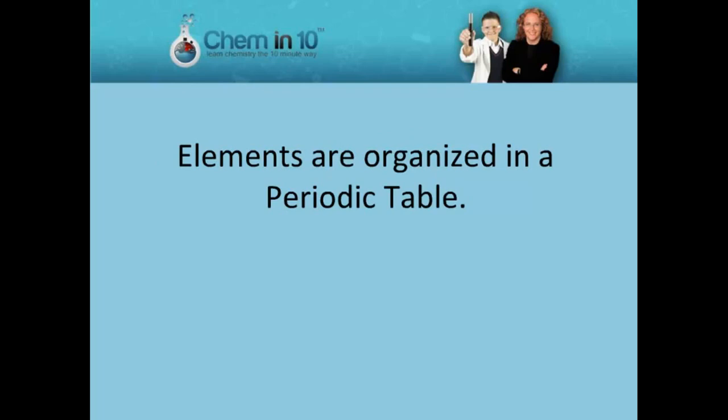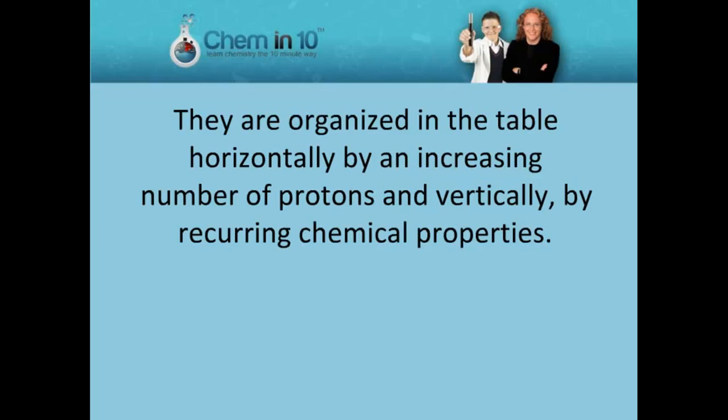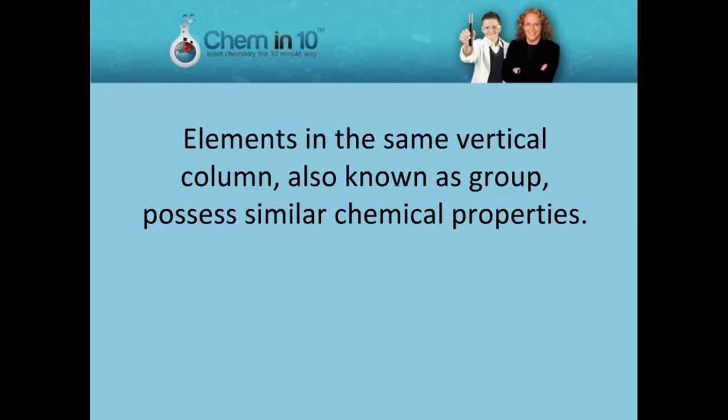Elements are organized in a periodic table. They are organized in the table horizontally by an increasing number of protons and vertically by recurring chemical properties. Elements in the same vertical column, also known as a group, possess similar chemical properties.